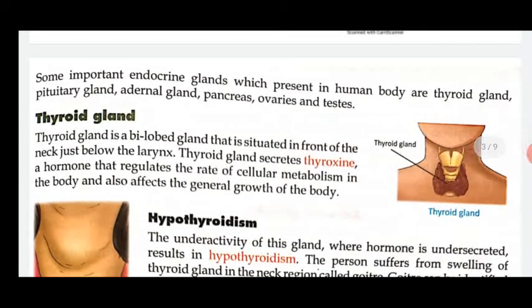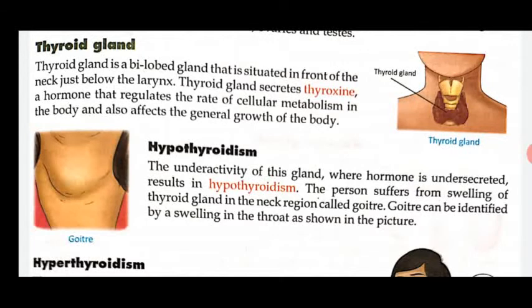Now we will discuss the thyroid gland. The thyroid gland is a bilobed gland situated in front of the neck, just below the larynx. It has two lobes, just like the pituitary. The thyroid gland sits beside the larynx — the vocal structure in our throat. The thyroid gland releases the hormone thyroxine, which regulates cellular metabolism.